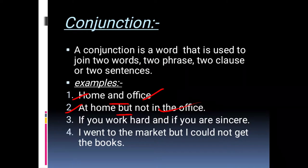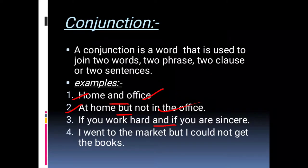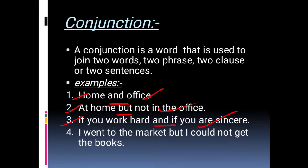Moving towards the next example: If you work hard and if you are sincere. In this, our conjunction will be 'and' because it is joining two clauses — 'if you work hard' and 'if you are sincere.' Moving towards the next example: I went to the market but could not get the books. In this sentence, our conjunction will be 'but' because it is joining two sentences.